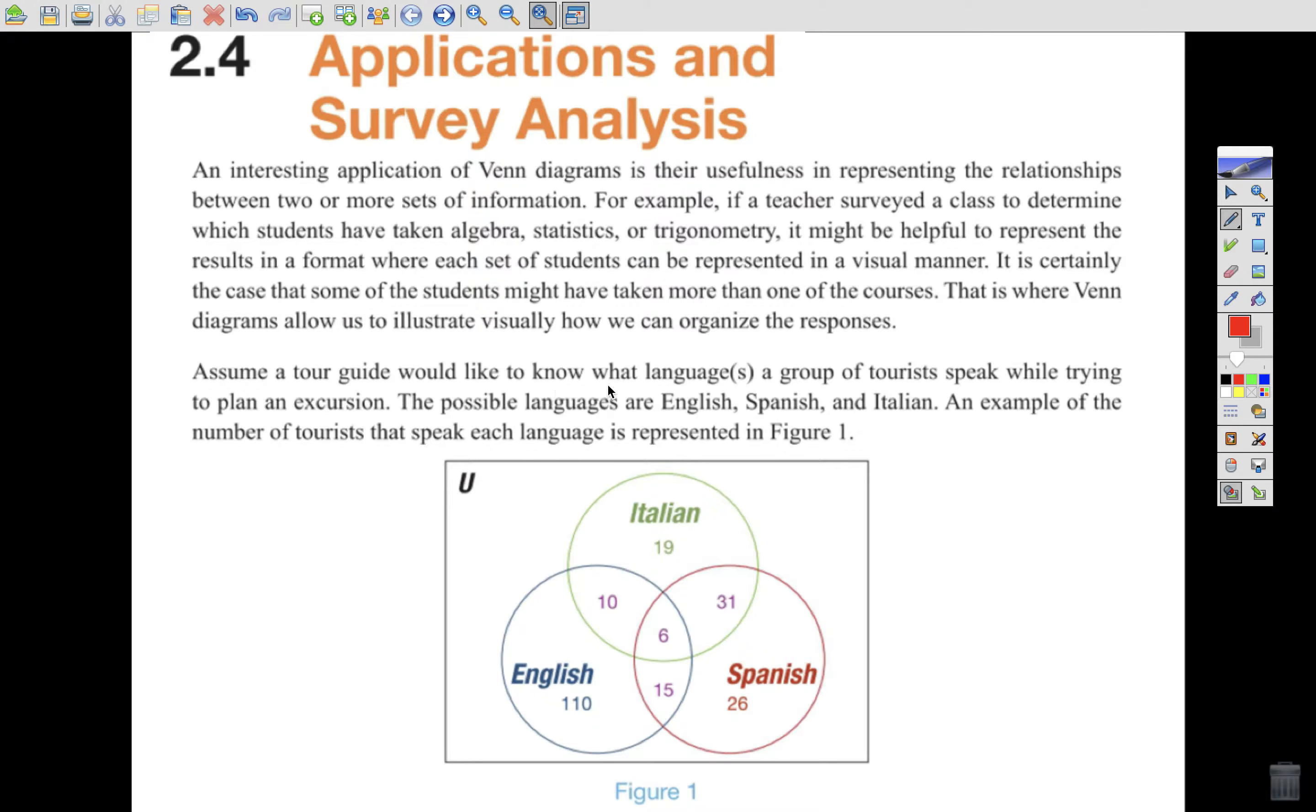Assume a tour guide would like to know what language or languages a group of tourists speak while trying to plan an excursion. The possible languages are English, Spanish, and Italian. An example of the number of tourists that speak each language is represented in figure one. So we have the green is Italian, the English is blue, and the Spanish is red. Now how do we interpret all these different pieces? Well, this 110 down here are the people that only spoke English. 110 spoke English. 19 only spoke Italian. 26 only spoke Spanish.